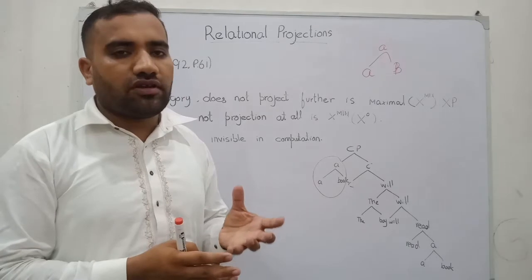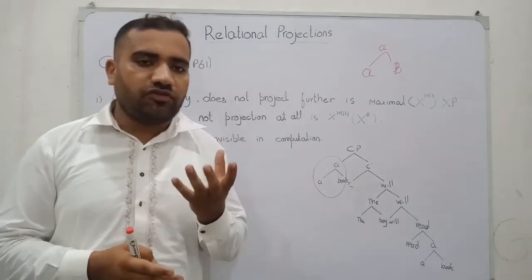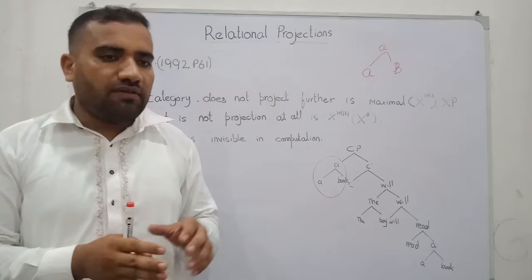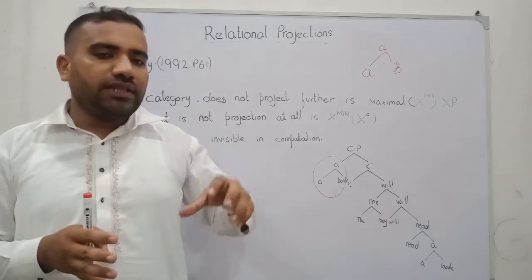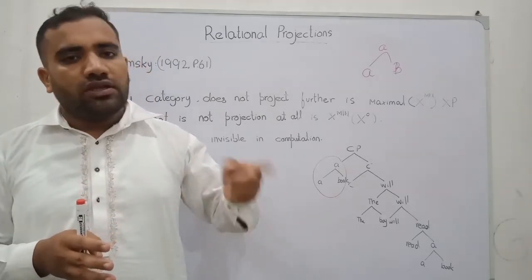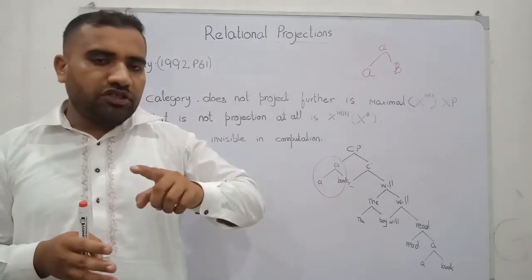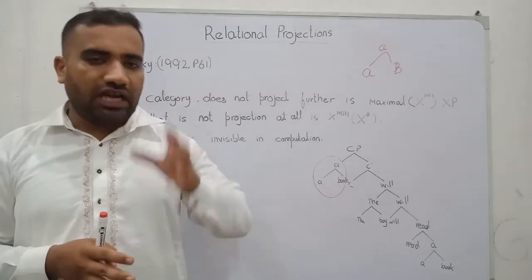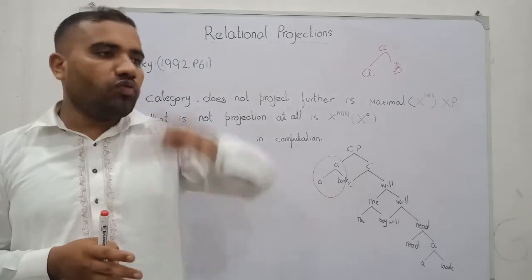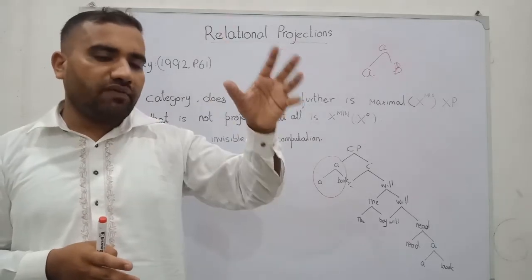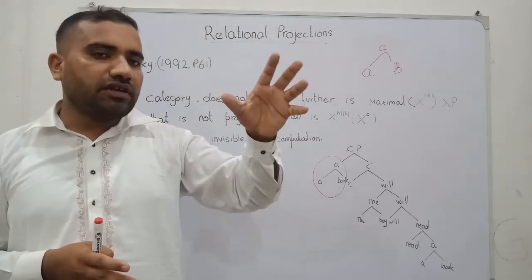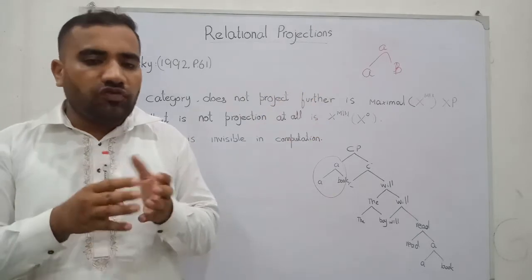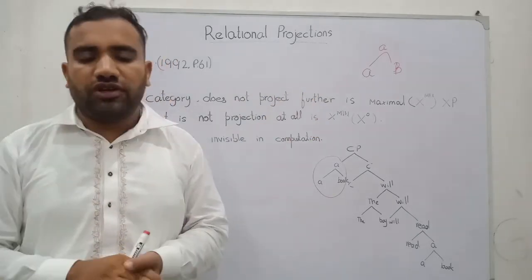We have already explained what a phrase marker is. In the phrase marker, one category is merged with another category, and over those two categories we have another dominant category, and over that we have yet another category that dominates the two, and in this way we build a structure of a sentence.